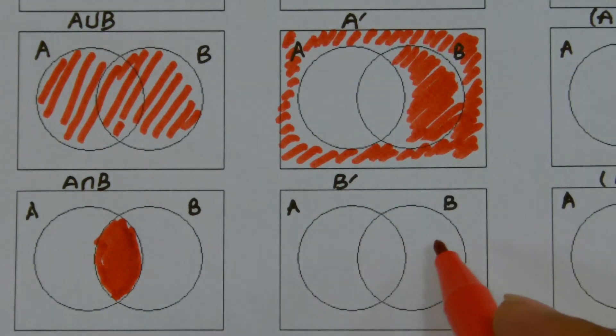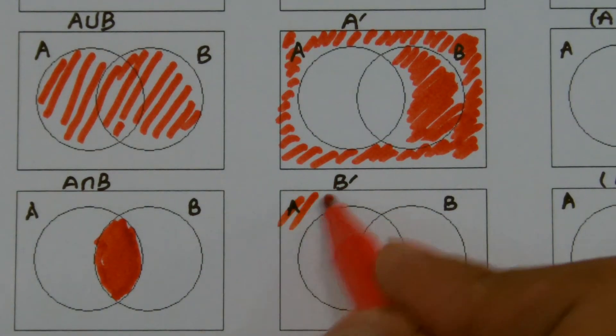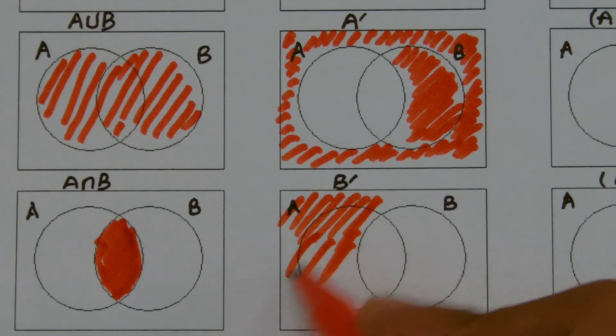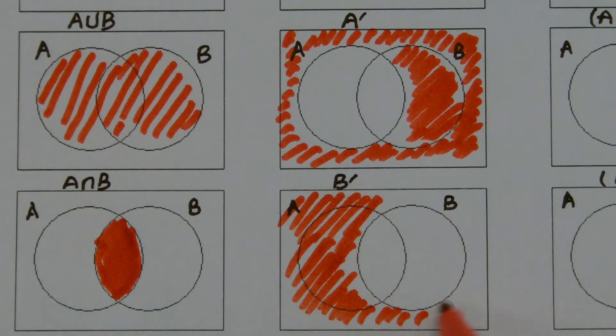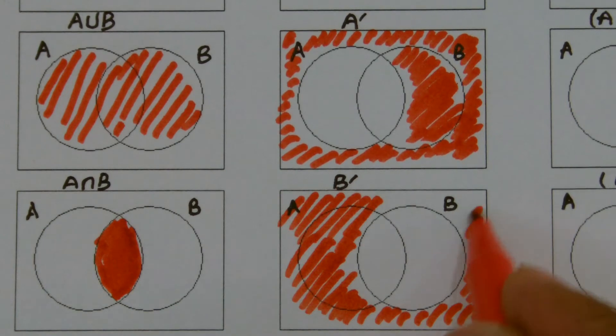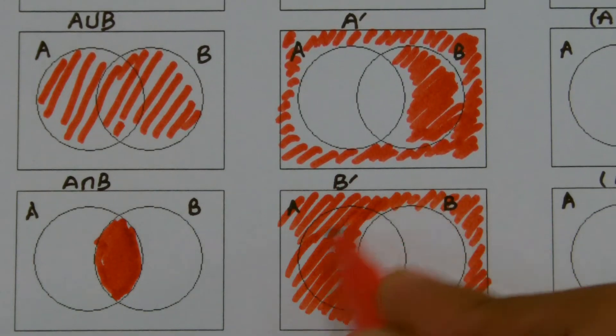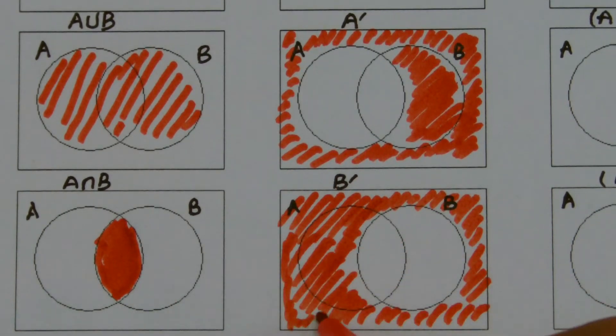Similarly, if I go for B complement, I would shade everything but B. So that's how I go. This is how we do it. So everything but B. And this is how we shade B complement.